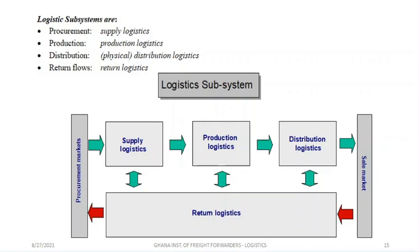When you move from production, you go to distribution logistics, where after products have been manufactured they have to be distributed. That brings you to the market. When you get to the market and there's some anomaly or a non-conformance product, then it comes back to return logistics — they are returning the product.